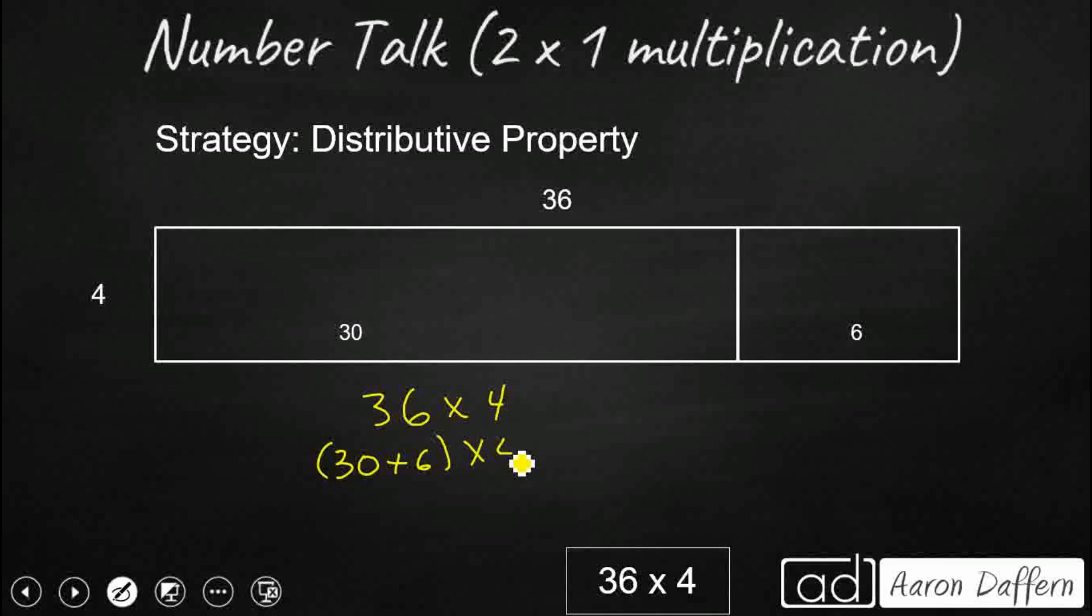Always a good way to go. And then we are going to distribute that 4 into each of those addends. So we are going to take our 30 and multiply that by 4, and we are going to take our 6 and multiply that also by 4. There we go. Let's make sure we get our correct factors there. And so 30 times 4, that is going to get you 120. 6 times 4, that is going to get you 24. 120 and 24.